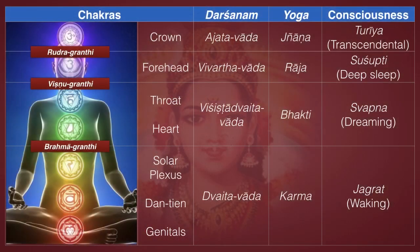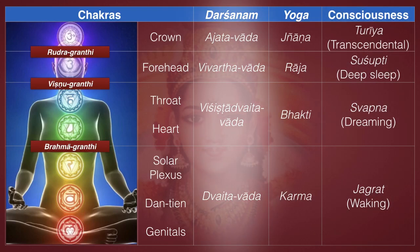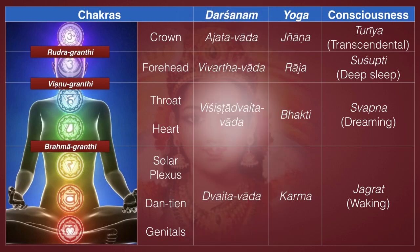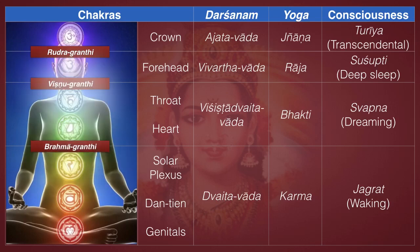Over the last couple of years, we've been talking again and again about the four states of consciousness and the four darshanams or views. They are Dvaita Vada, Vishishta Dvaita Vada, Vivarta Vada, and Ajata Vada. And then there are the knots or blocks or gateways: the Brahma Granti, the Vishnu Granti, and the Rudra Granti.